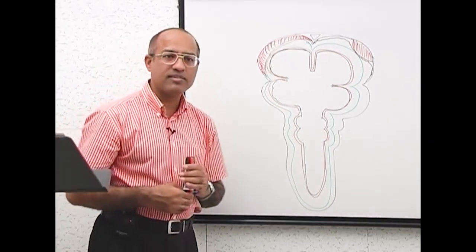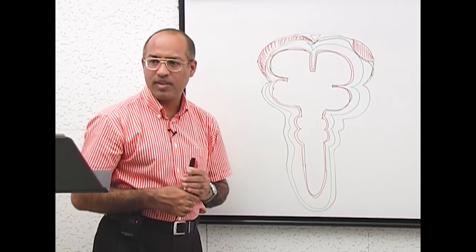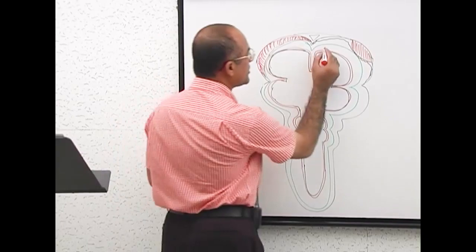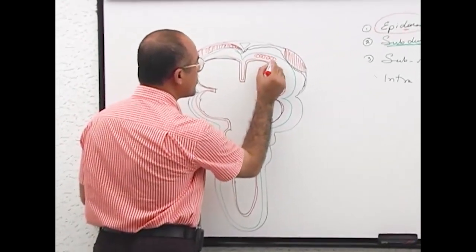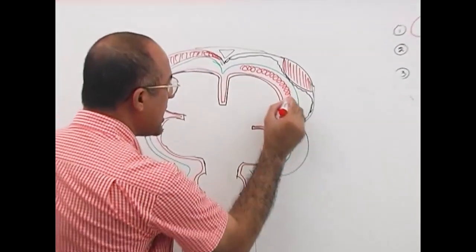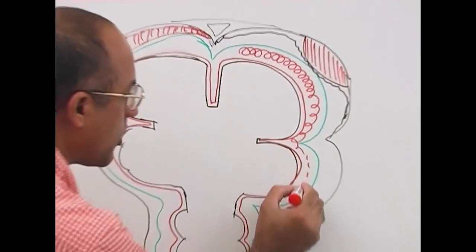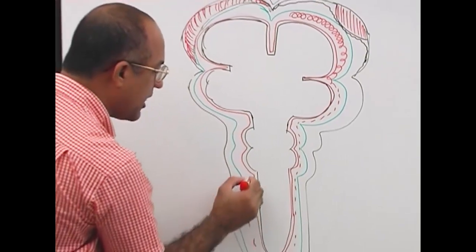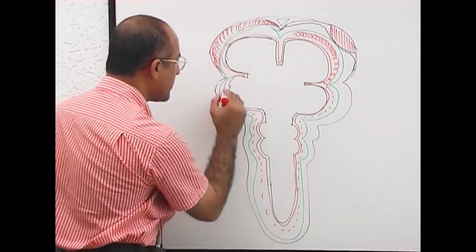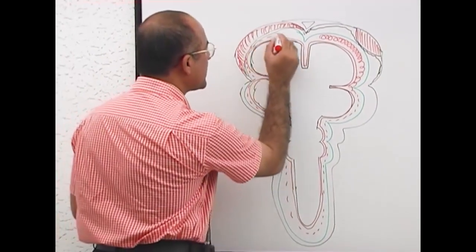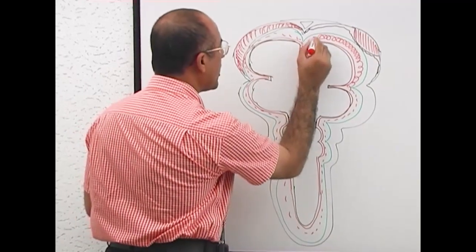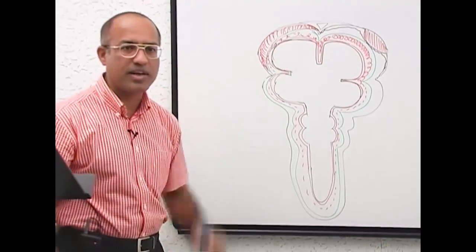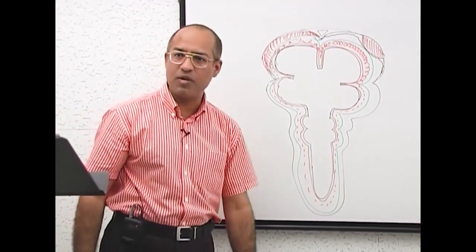Then the next one is subarachnoid. Subarachnoid hemorrhage. That is the hemorrhage which occurs at this point. Subarachnoid space. And this spreads very well throughout the. What is this? Subarachnoid space because it is full of CSF. So blood mixes in CSF and spreads all over. Is that right? Now what is the cause of this hemorrhage? Subarachnoid hemorrhage.